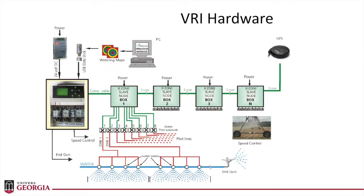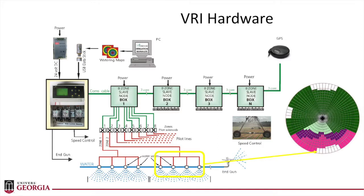Regarding the hardware: we have a PC where we create our variable rate prescription maps. Those maps are downloaded to the controller, which then sends commands to individual solenoids. The solenoids control zones of the pivot — zones that consist of a number of sprinklers operated together. You could have a zone with six or seven sprinklers working together, or a zone that is just one sprinkler depending on the resolution you want in the field. A group of four sprinklers corresponds to one grid cell application rate.